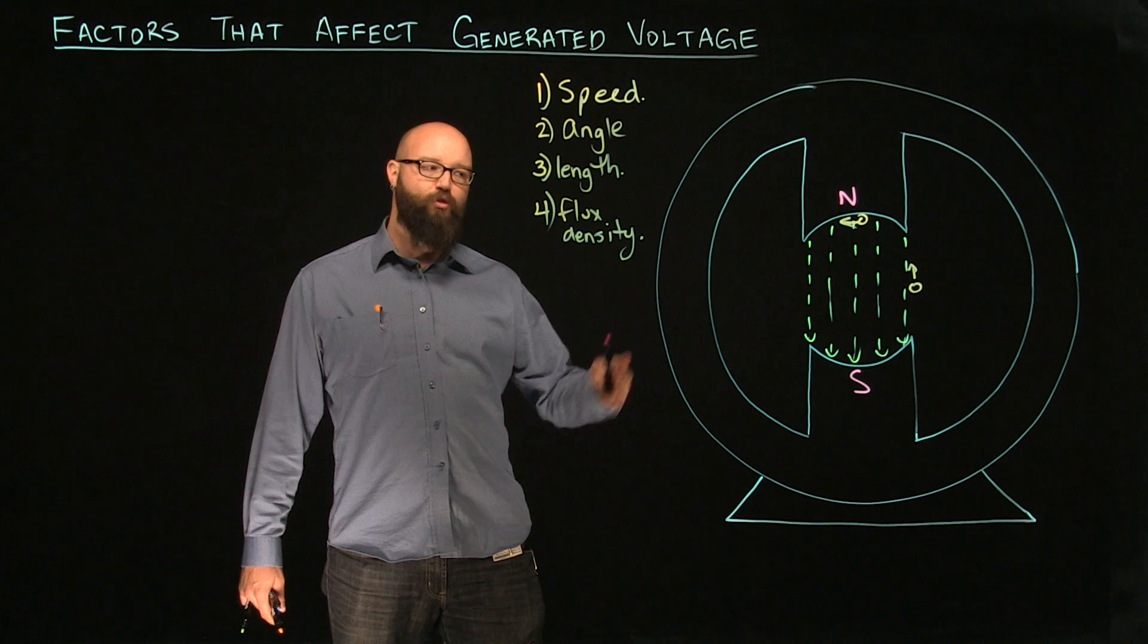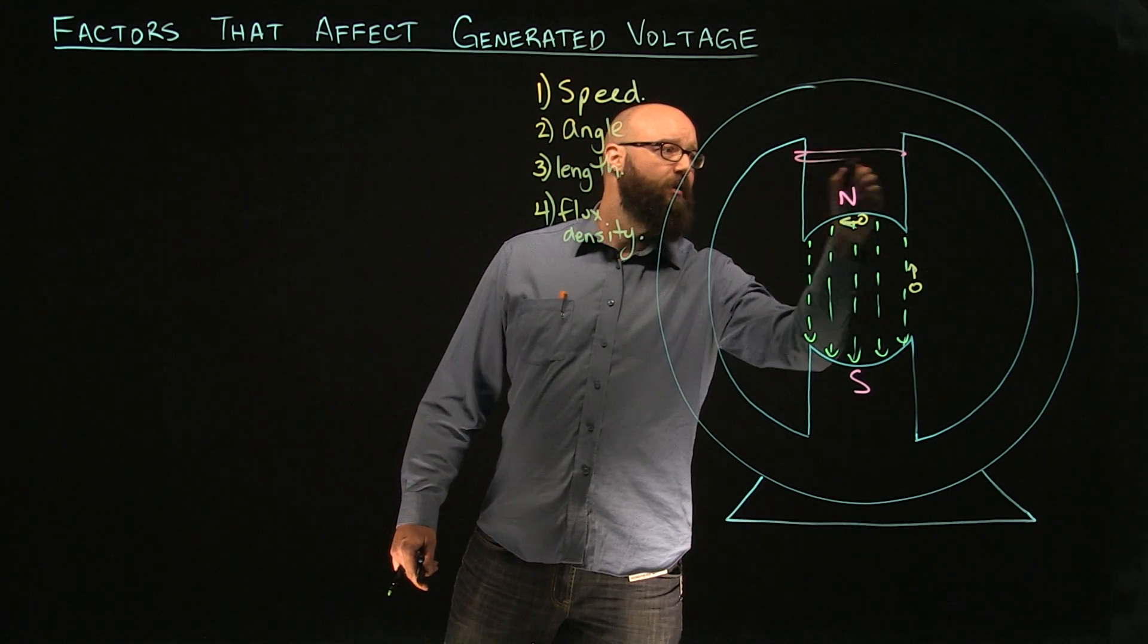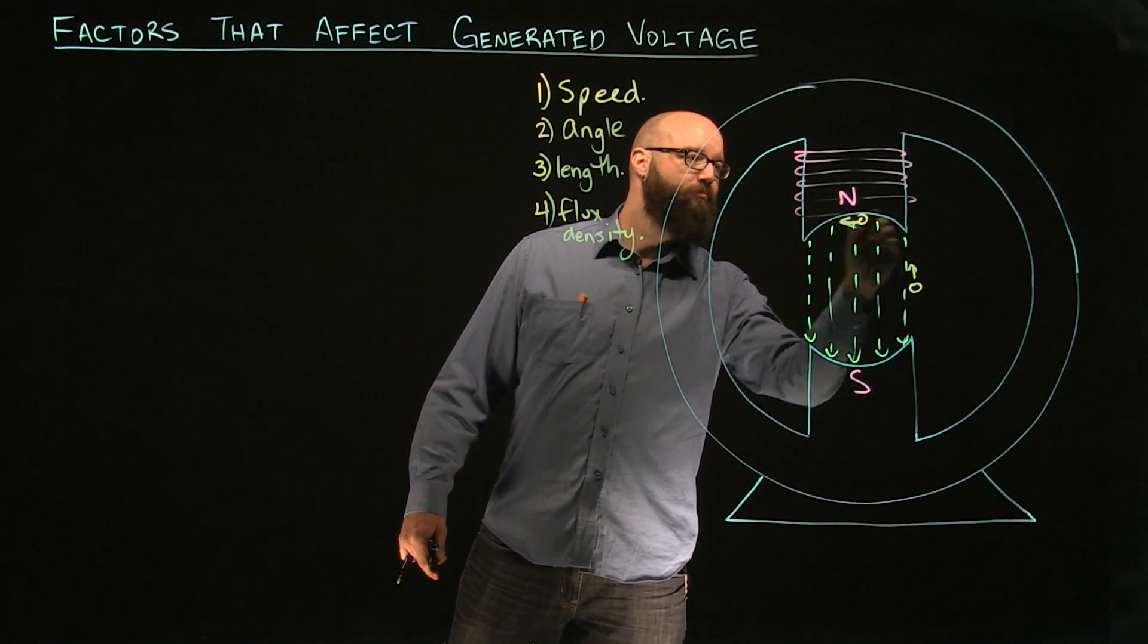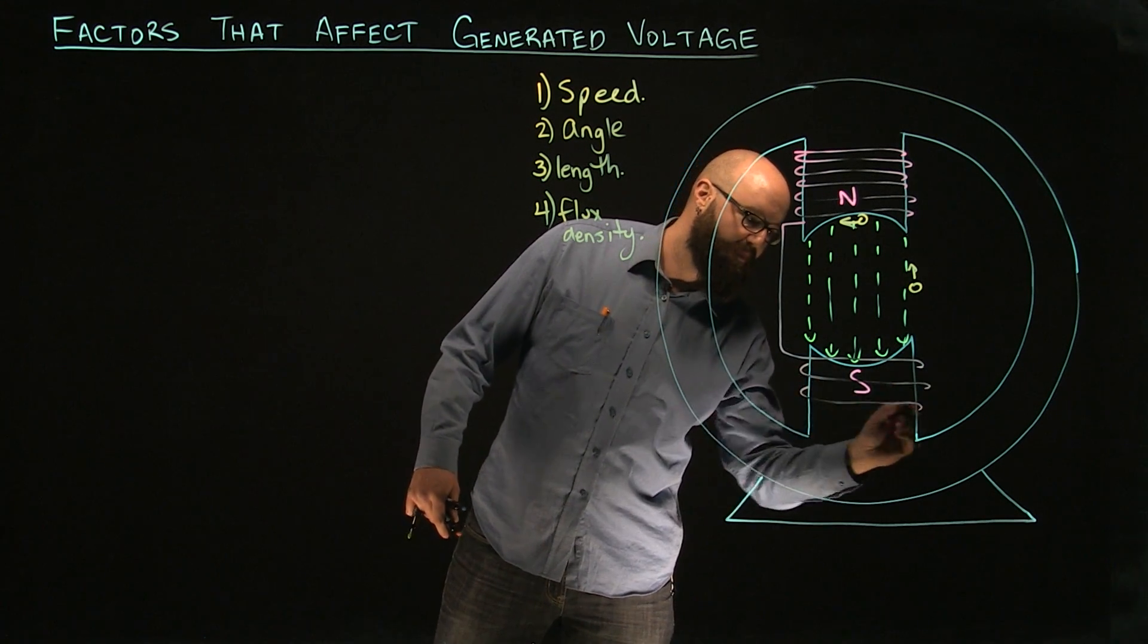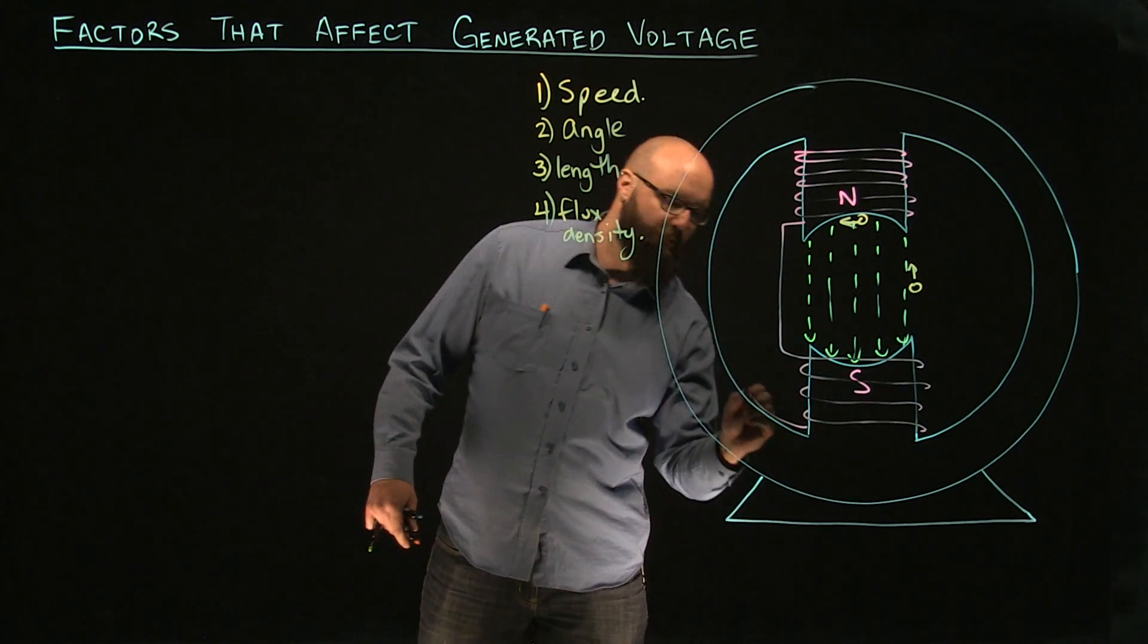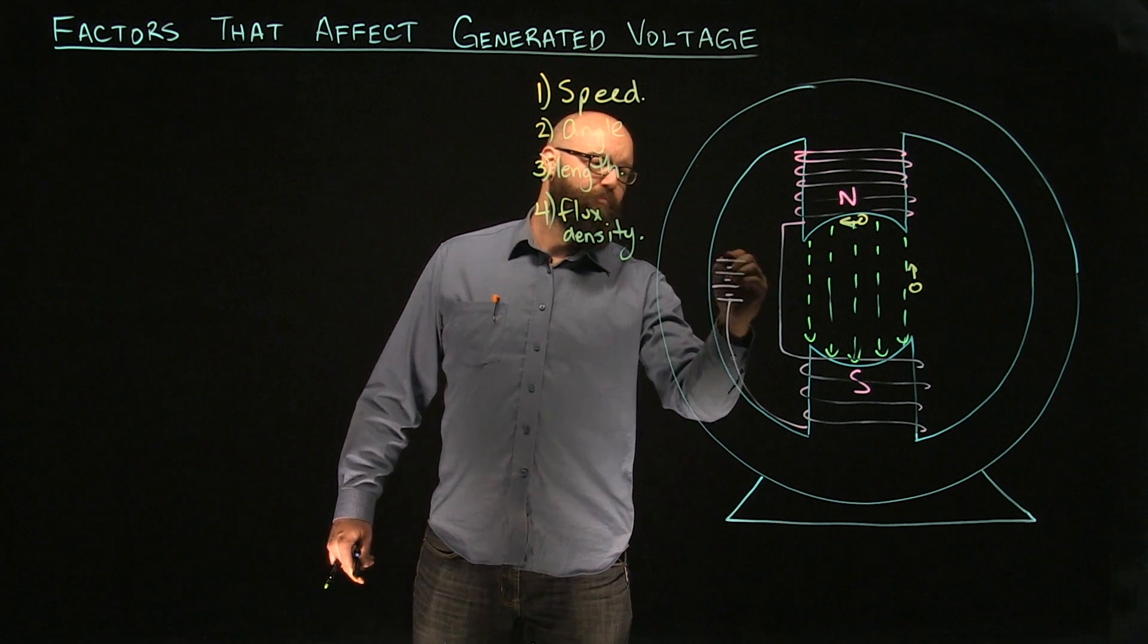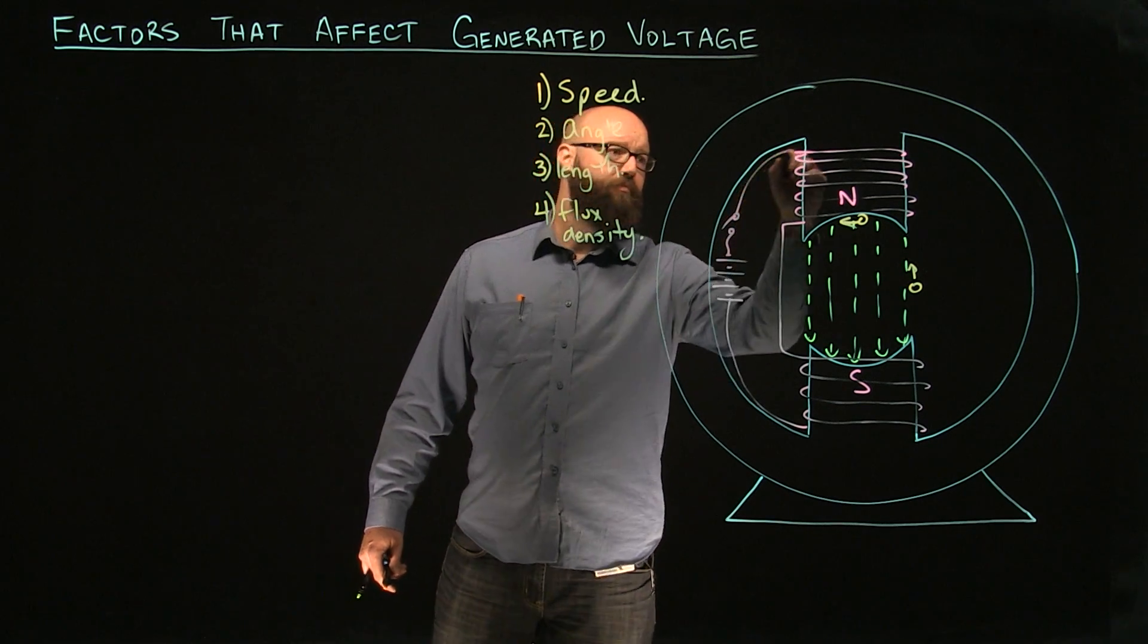But what we can do is supercharge this magnetic field. We can take a conductor and wrap it around. We'll call it our field winding for now. And maybe we'll connect it up to a DC source. We'll put a little switch in there.